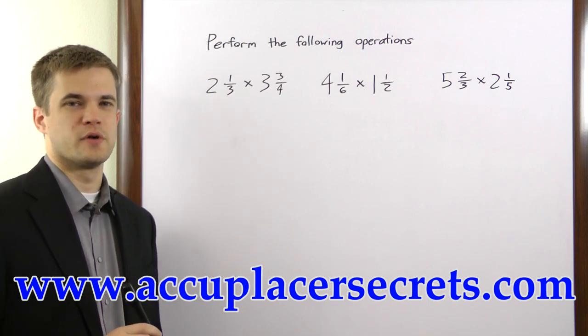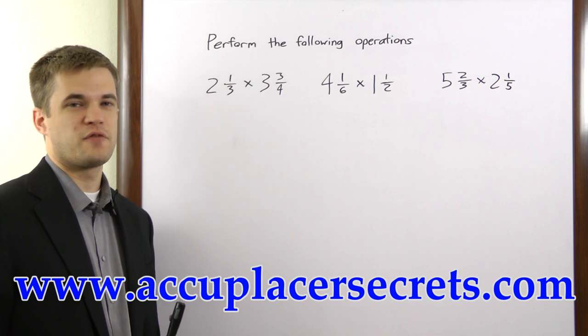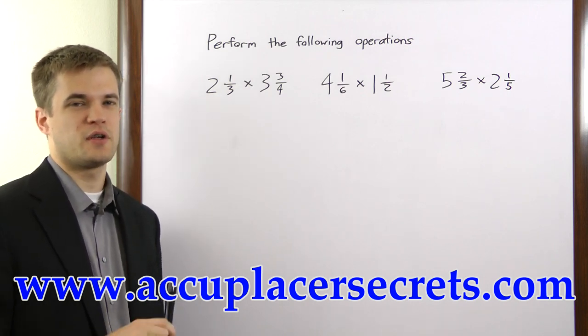In order to multiply two mixed numbers, you have to first convert both numbers to fractions. Then, after you multiply the fractions, you can convert them back to mixed numbers. Let's look at a few examples.